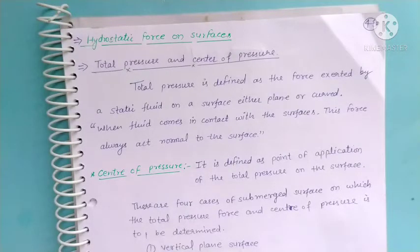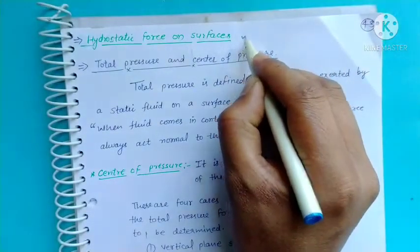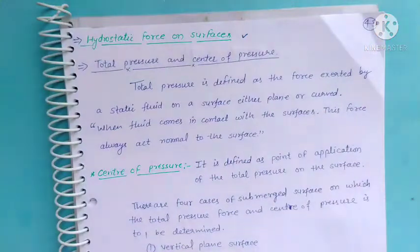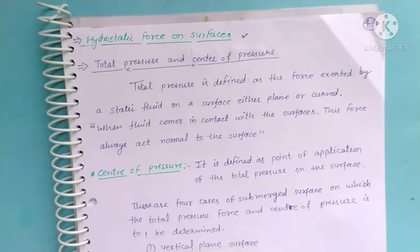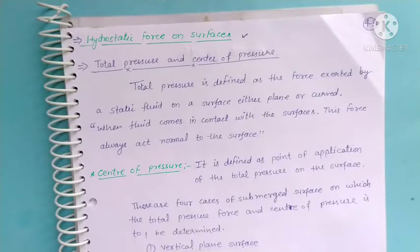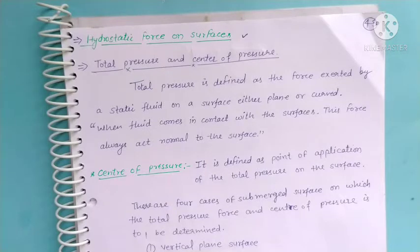Hydrostatic force on surfaces — यानि fluid द्वारा किसी surface पर लगाया जाने वाला force। Total pressure is defined as the force exerted by a static fluid on a surface, either plane or curved। Center of pressure वह point है जिस पर total pressure act करता है। Surfaces चार types की होती हैं: vertical plane, horizontal plane, inclined plane, और curved surface।